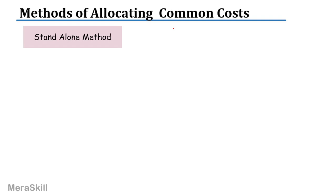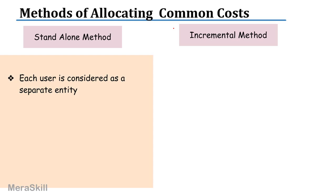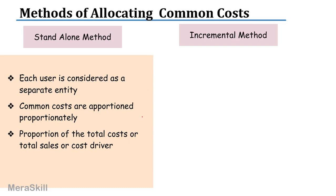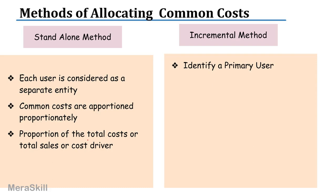What are the methods of allocating common costs? There are two methods: the stand-alone method and the incremental method. In the stand-alone method, each user is considered as a separate entity and the common costs are apportioned proportionately — perhaps on the basis of IT hours, proportion of total cost, or proportion of total sales as the cost driver. For example, transportation cost may be on the basis of total sales value.